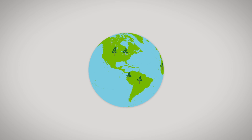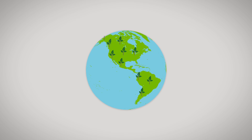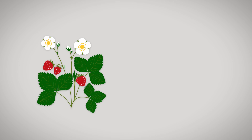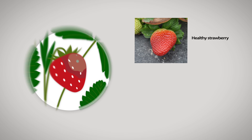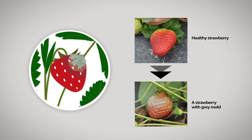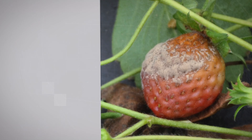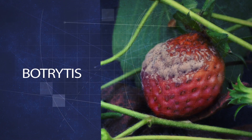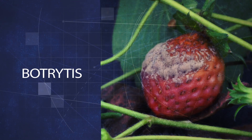Gray mold is a disease that affects many crops around the world. Symptoms of gray mold can often be seen on strawberries after a few days in the fridge. Gray mold is caused by a fungus called botrytis.